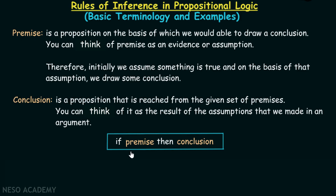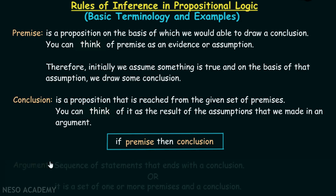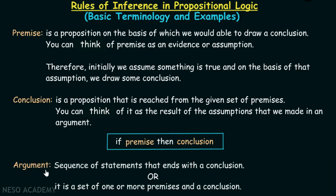We already know what a compound proposition 'if p then q' is. Here p is the premise and q is the conclusion. We know that if the premise is true, then the conclusion also must be true. Now, argument is a sequence of statements that ends with a conclusion, or it is a set of one or more premises and a conclusion.